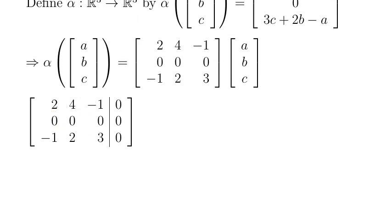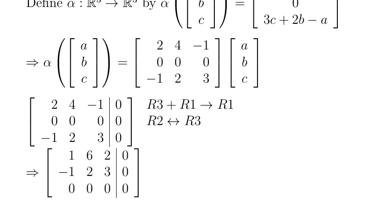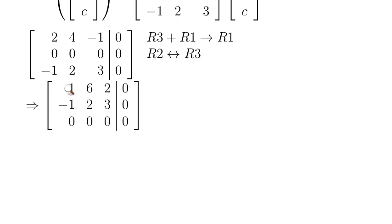We're going to apply the following two row operations. First, I want to get a 1 here, so I'm going to take row 3 and add it to row 1 — that replaces row 1. I also have an all-zero row that I want at the bottom, so I'm going to switch row 1 and row 3 with row 2. The resulting matrix should look something like this — we have a 1 here and all zeros at the bottom.